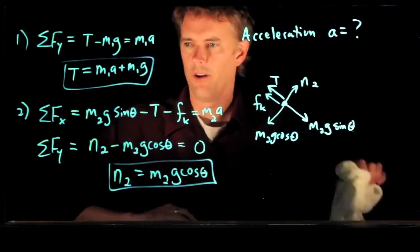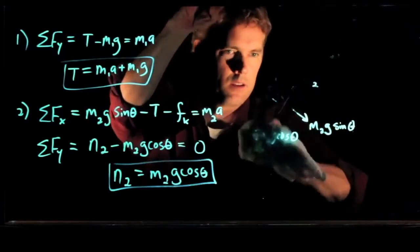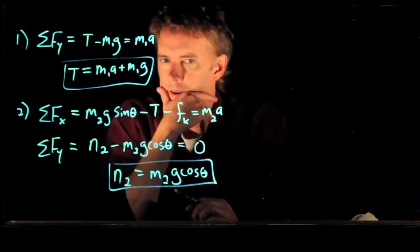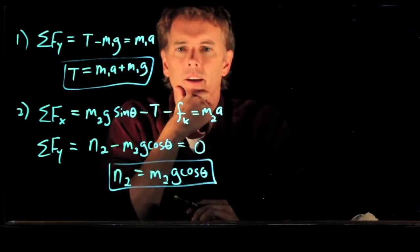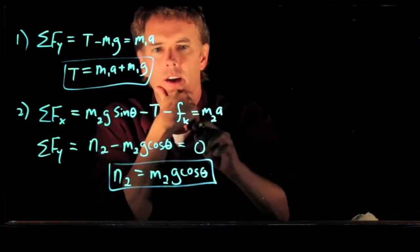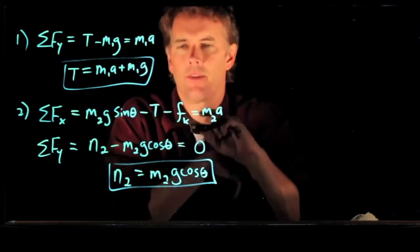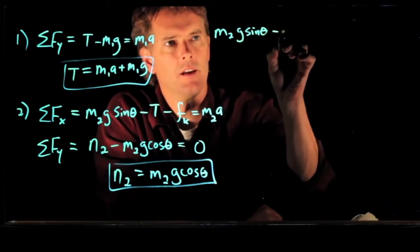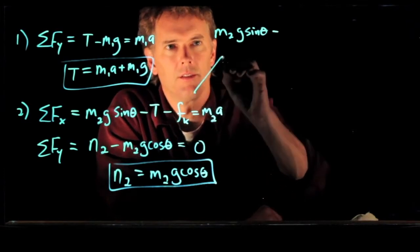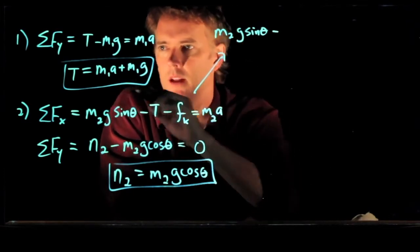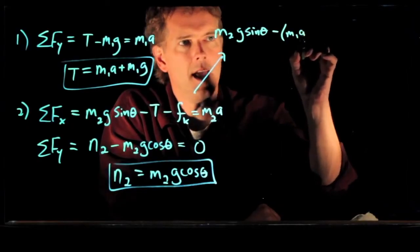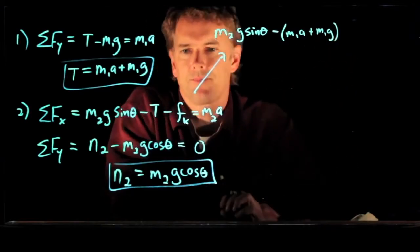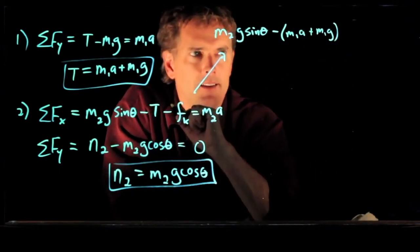All right, so now we're getting somewhere. Let's take a look at what is left. Well, it looks like this equation right here is a good place to start. So let's write that up here. M2g sine theta minus T. But we know what T is. It's right there. M1a plus M1g.